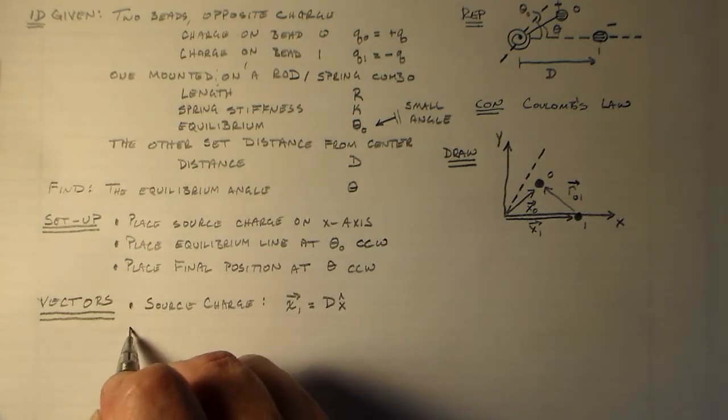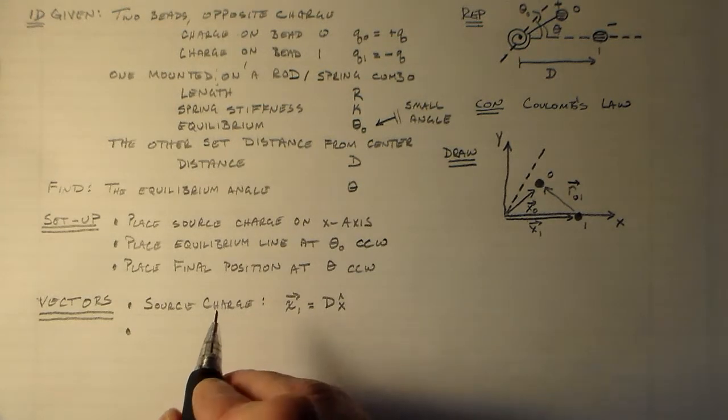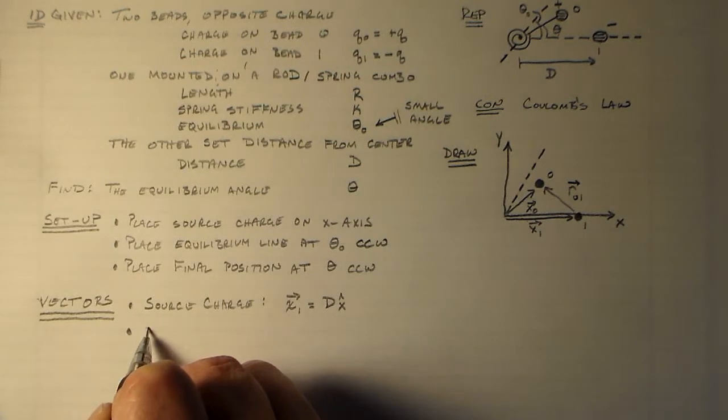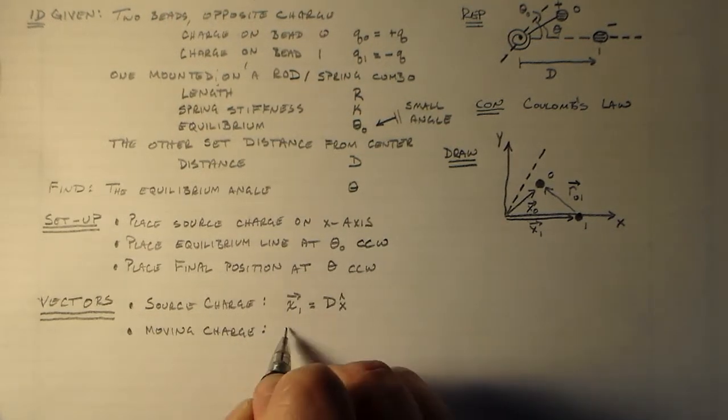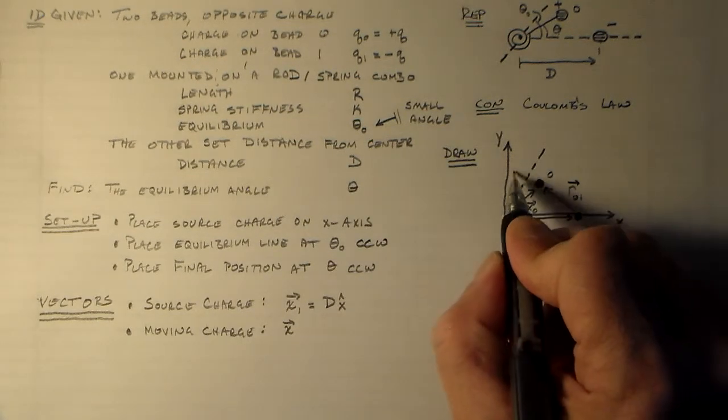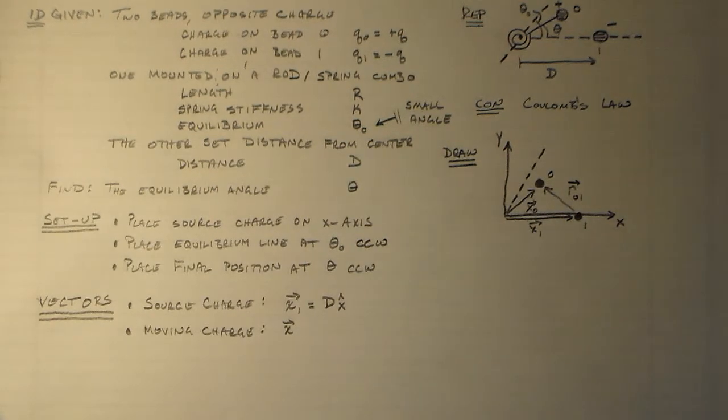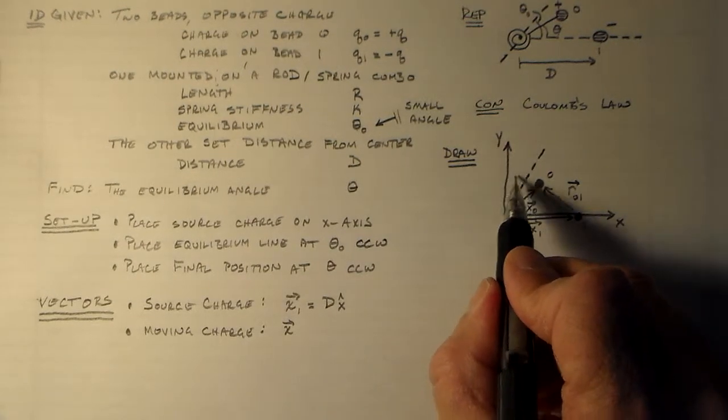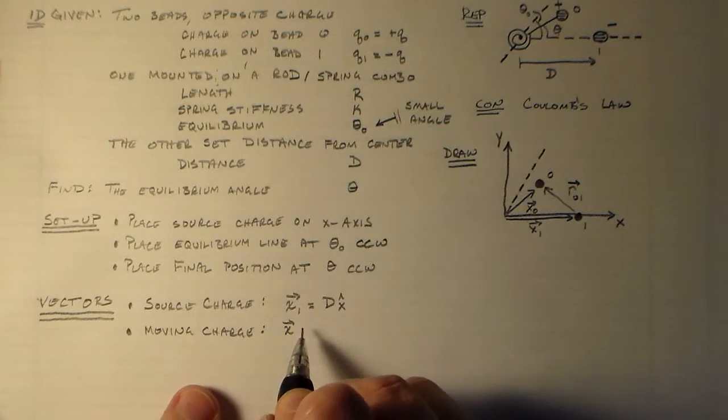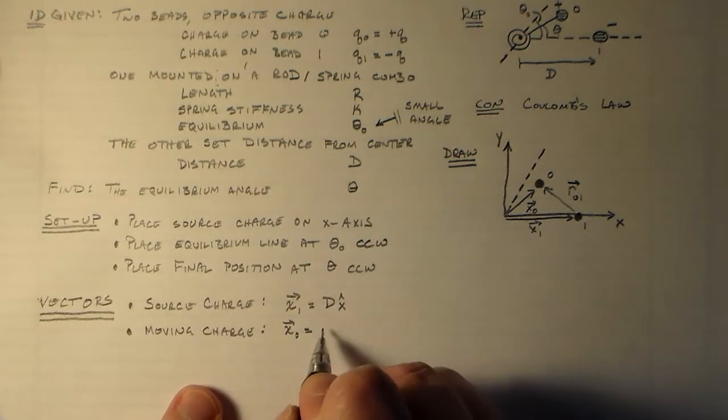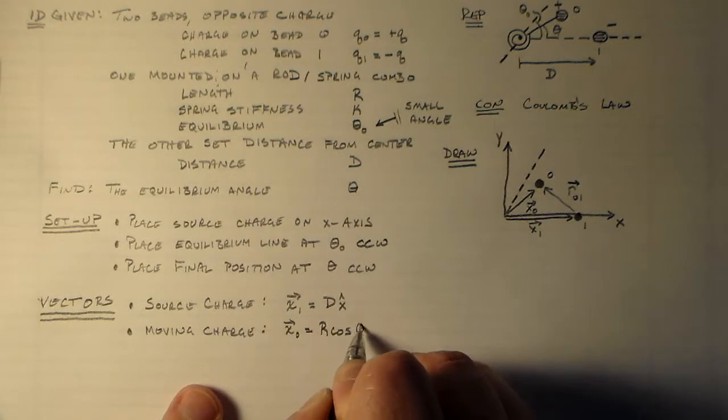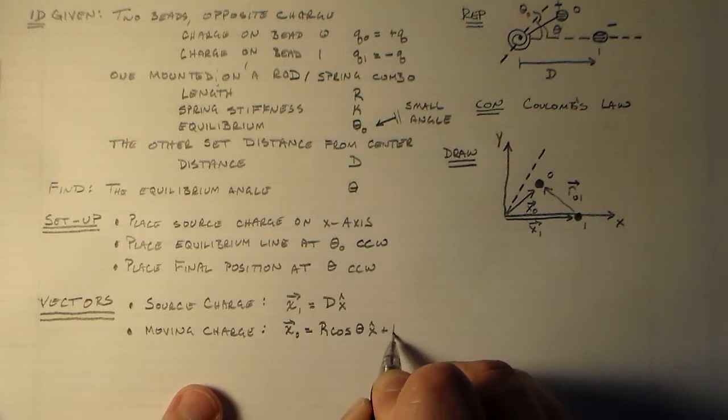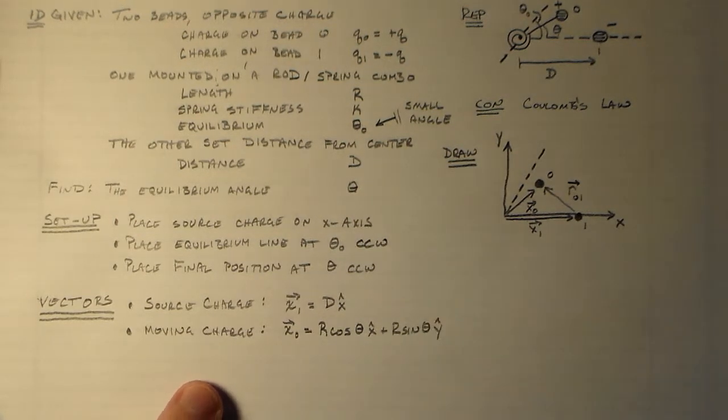And then we also have our moving charge. Now that guy is moving around on this circle, right? From the y-axis to the x-axis. Does that make sense? It's moving from y to x along a circle. So, what we want to do is we want to write that as a circle, and we want to get this angle theta in there, so it's going to be pretty good. Just the simplest of trigonometry, r cosine theta in the x hat direction, plus r sine theta in the y hat direction. Easy. No problems.